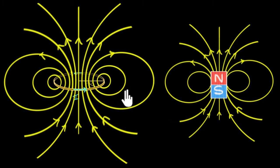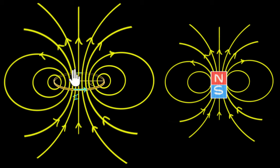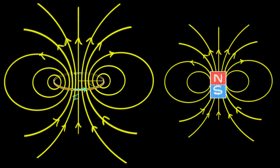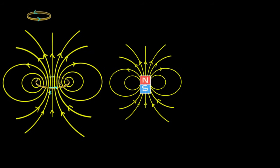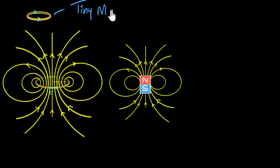A current loop behaves like a tiny magnet. It doesn't have to be circular — it doesn't matter what shape the loop is. As long as it's small enough, or as long as you go far away from it so that the current loop looks very small to you, then the magnetic field lines will resemble that of a tiny magnet. So we can say a current loop behaves like a tiny magnet.